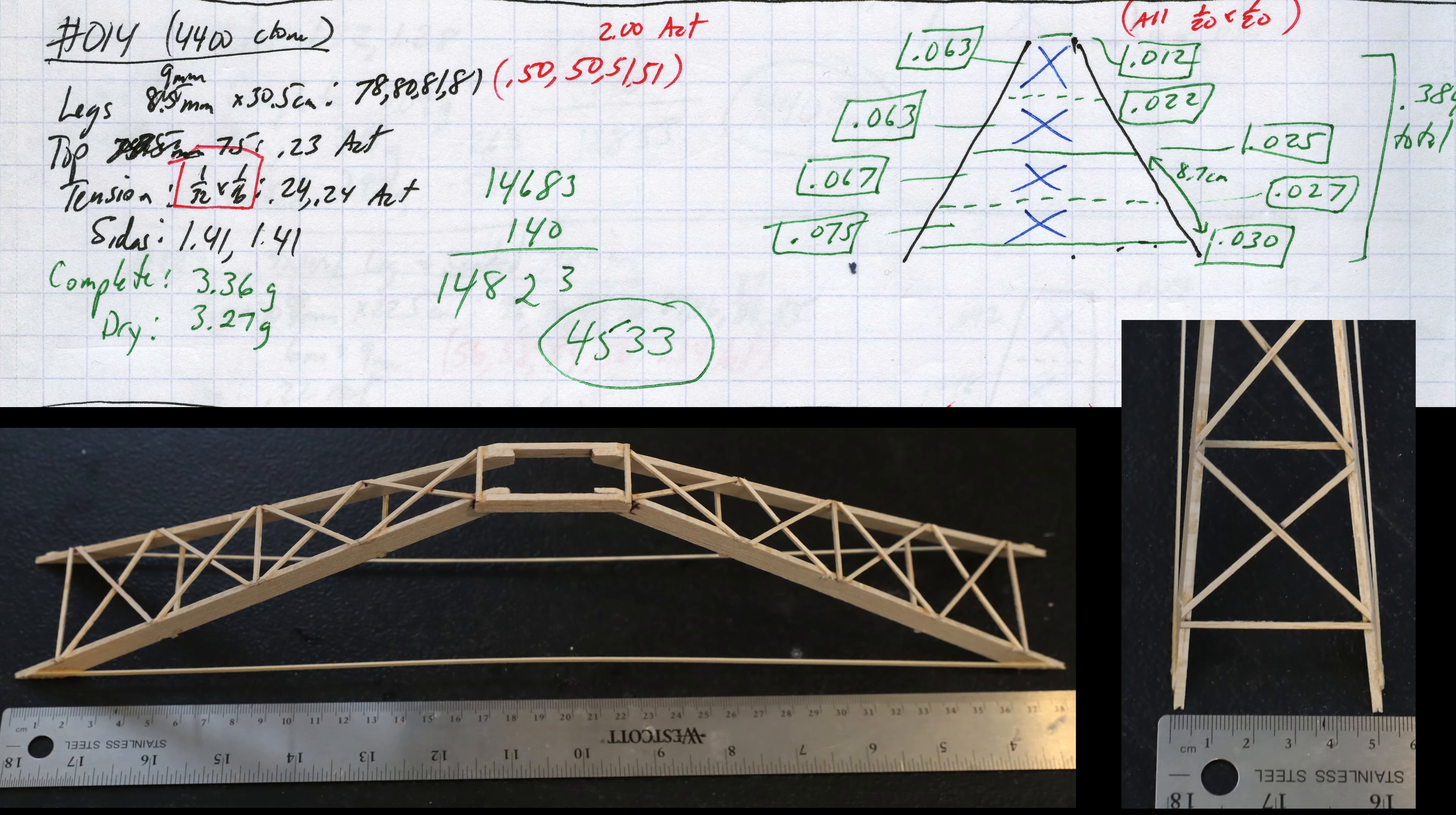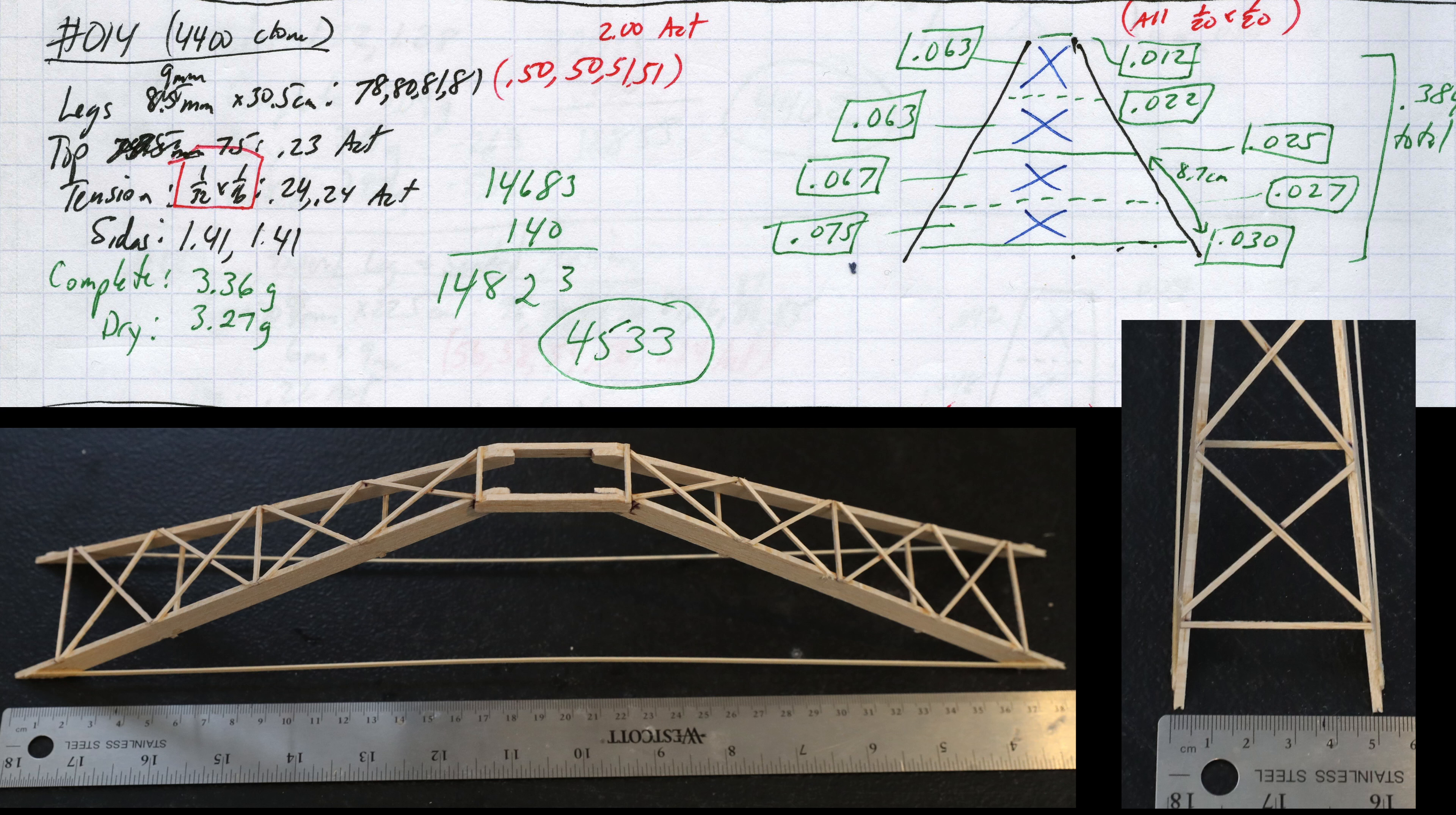It all came together with build number 14. This would turn out to be my best result. The bridge weighed 3.27 grams and held 14.823 kilograms for an efficiency of 4533. I was very happy with this result and this bridge would have easily placed second at nationals for that year.